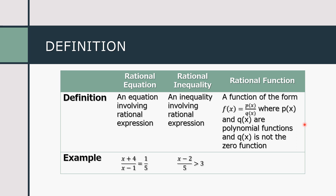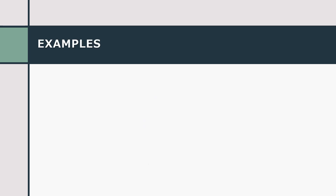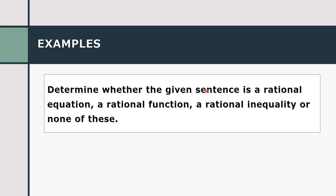For a rational function, it is a function of the form f(x) = p(x)/q(x), where p(x) and q(x) are polynomial functions and q(x) is not the zero function. Our example is f(x) = (x² + 6x + 8)/(x + 4). We use the function notation f(x), which can also be replaced by the variable y, and x is the independent variable. Now let's go further by determining whether a given expression is a rational equation, rational function, rational inequality, or none of these.